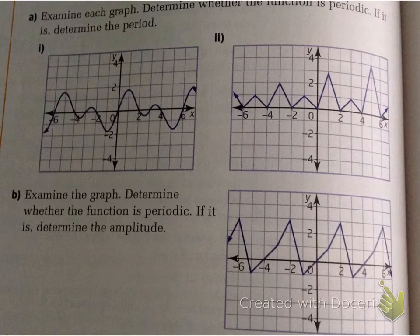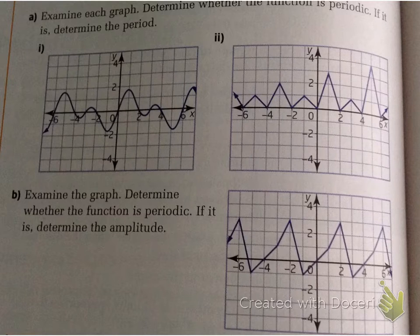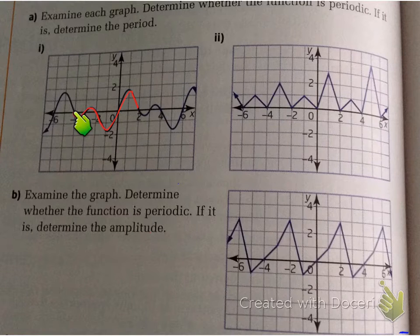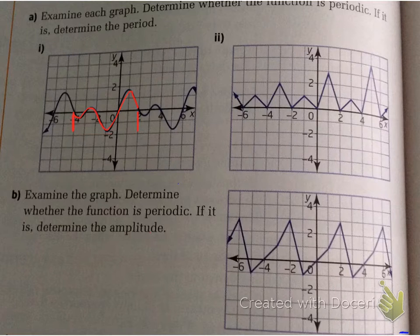Here are some examples. We're going to examine each graph and determine whether the function is periodic, and if it is, determine the period. Does this particular graph have a pattern that repeats itself? The answer is yes. So the first thing you want to do is trace one cycle. We started here, moved up, down, around, over, until we reached the end of the cycle, and then it begins to repeat again.